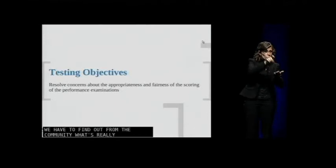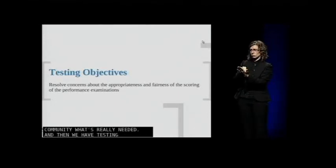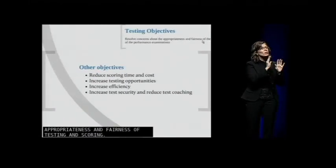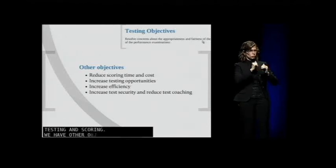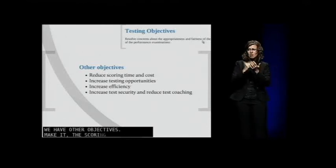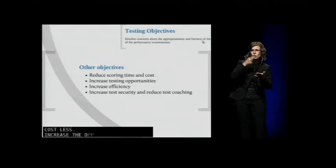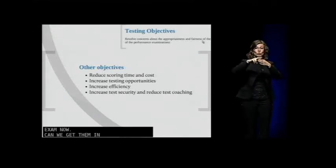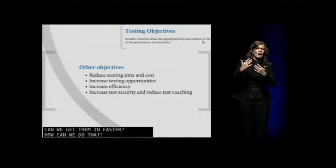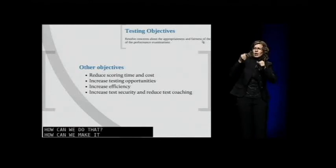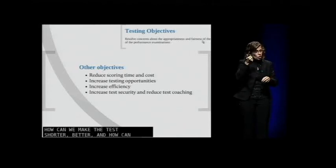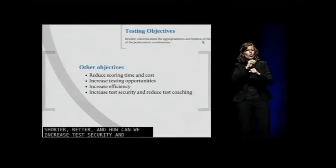Then we have testing objectives. Resolve concerns about appropriate and fairness of testing and scoring. We have other objectives. Make it the scoring time and cost less. Increase the opportunity to take the test. People are waiting to sit the exam now. Can we get them in faster? How can we do that? How can we make it more efficient? How can we make the test shorter, better?